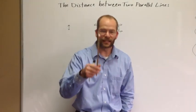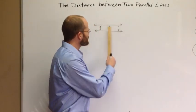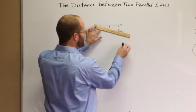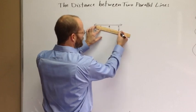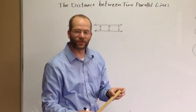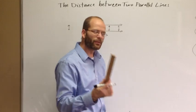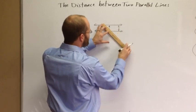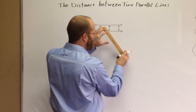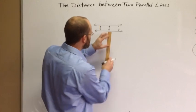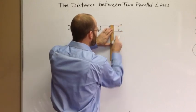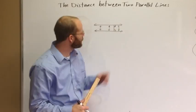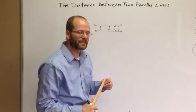If I handed you a ruler and said, measure the distance between these two lines, you probably wouldn't measure at an angle and say it's 8 inches. You could do that, but it wouldn't be useful because everyone who walks up with a ruler would measure at a different angle — someone might say 4 inches, someone else might say 2½. So we always measure along a perpendicular segment. That's the distance between them and it really makes the most sense in practice.